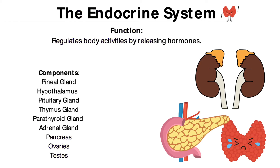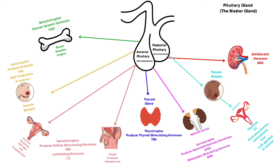The endocrine system's main function is to release hormones. Some components are the pineal gland, hypothalamus, pituitary gland, thymus gland, parathyroid gland, adrenal gland, pancreas, ovaries, and testes.